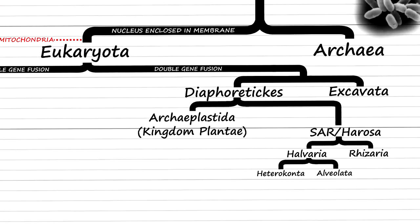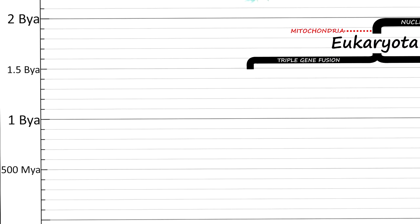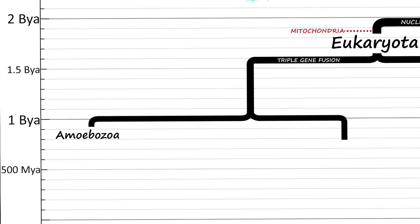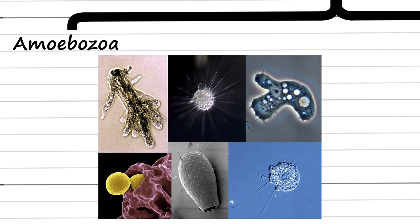Now we go back a few steps to the other lineage of eukaryotes, and we can further divide this into Amoebozoa and Opisthokonta. Amoebozoa is a major group that consists mostly of unicellular organisms. Most people are familiar with the amoeba, the species after which the whole group is named, and which is often studied in biology classrooms.